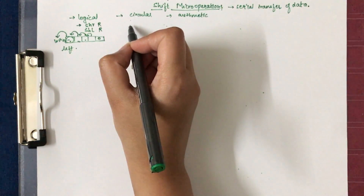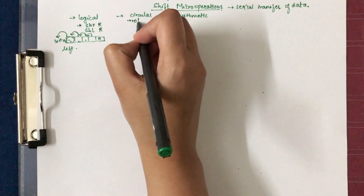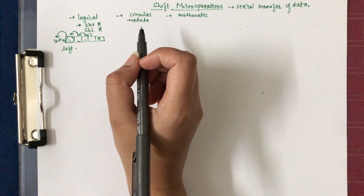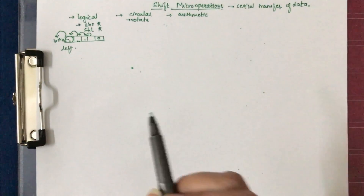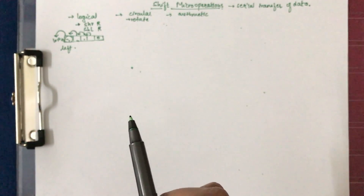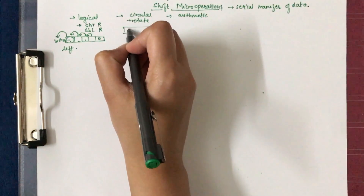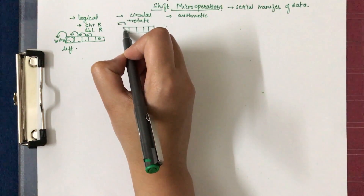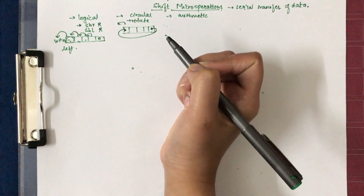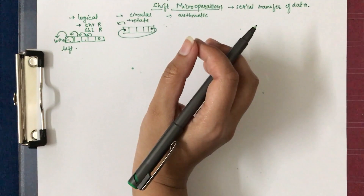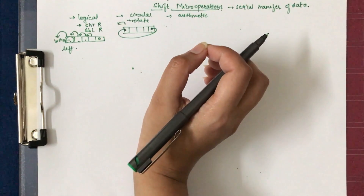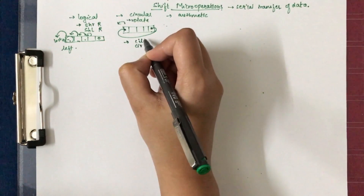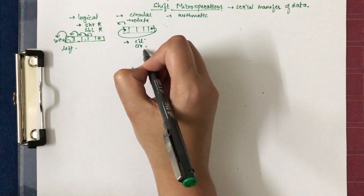Next is the circular shift micro-operation, also known as the rotate operation. The advantage here is that information is not lost. In a circular left shift, the bits are shifted to the left and the leftmost bit wraps around to the rightmost position. This is represented as CIL for circular left and CIR for circular right shift micro-operations.